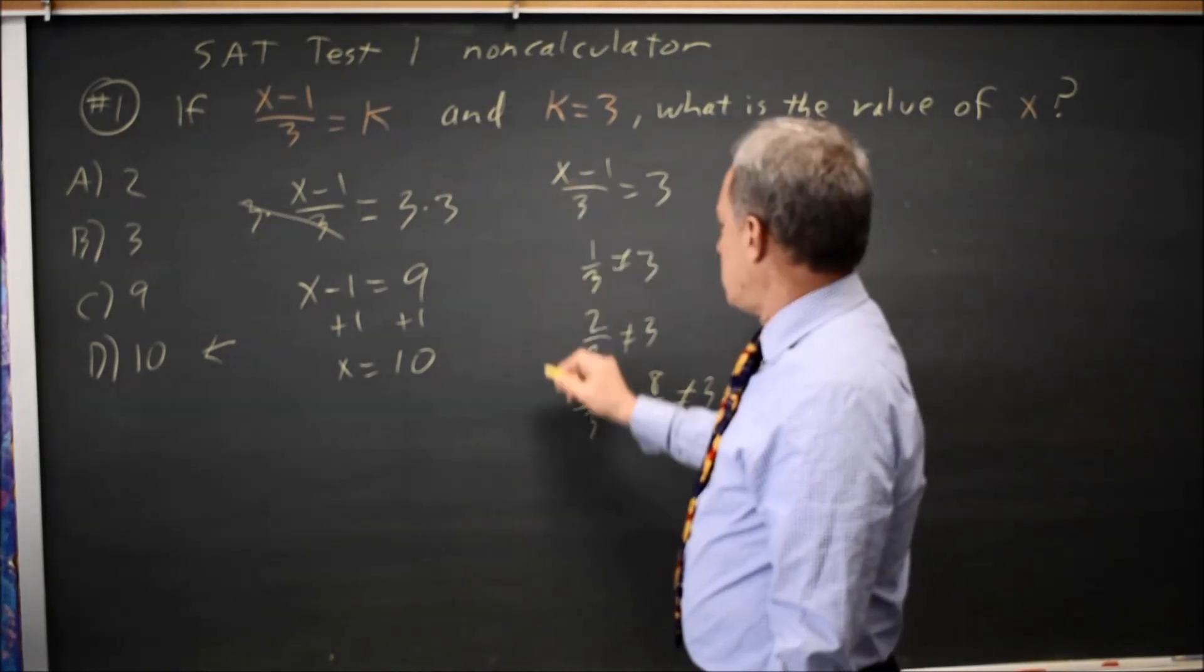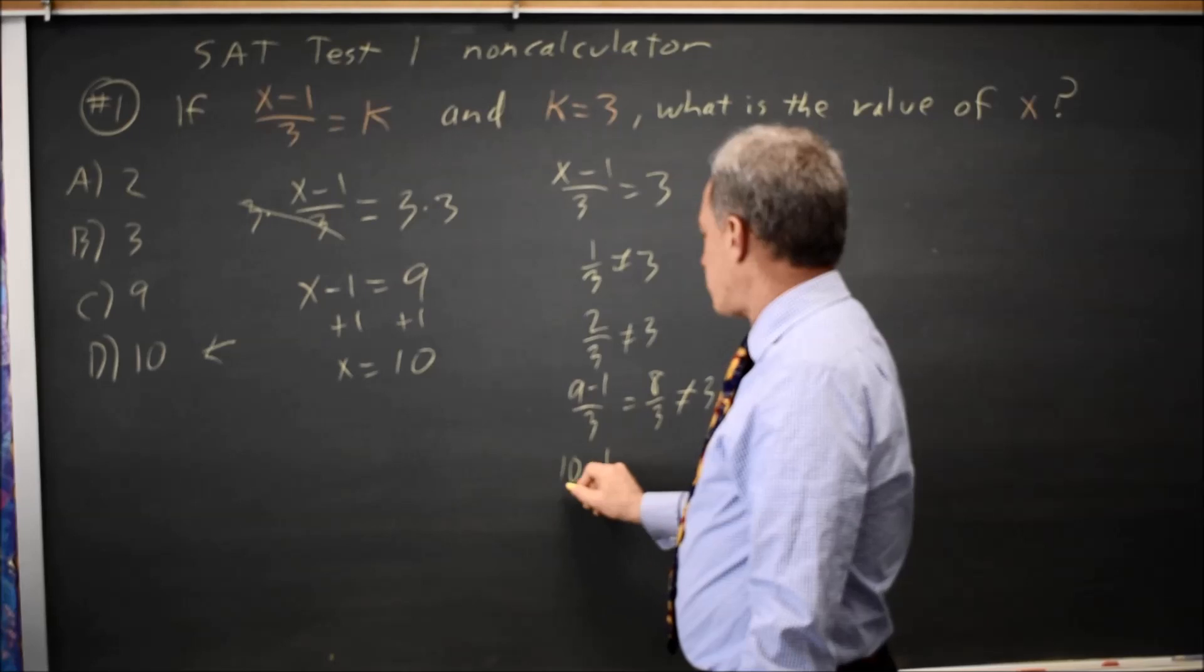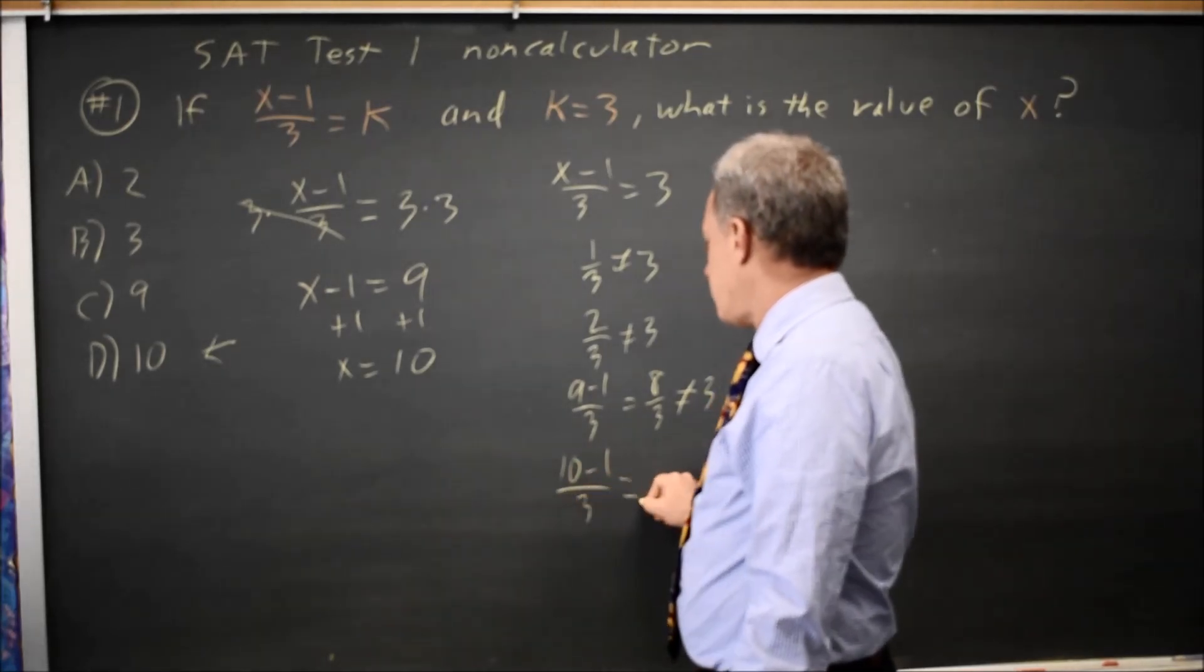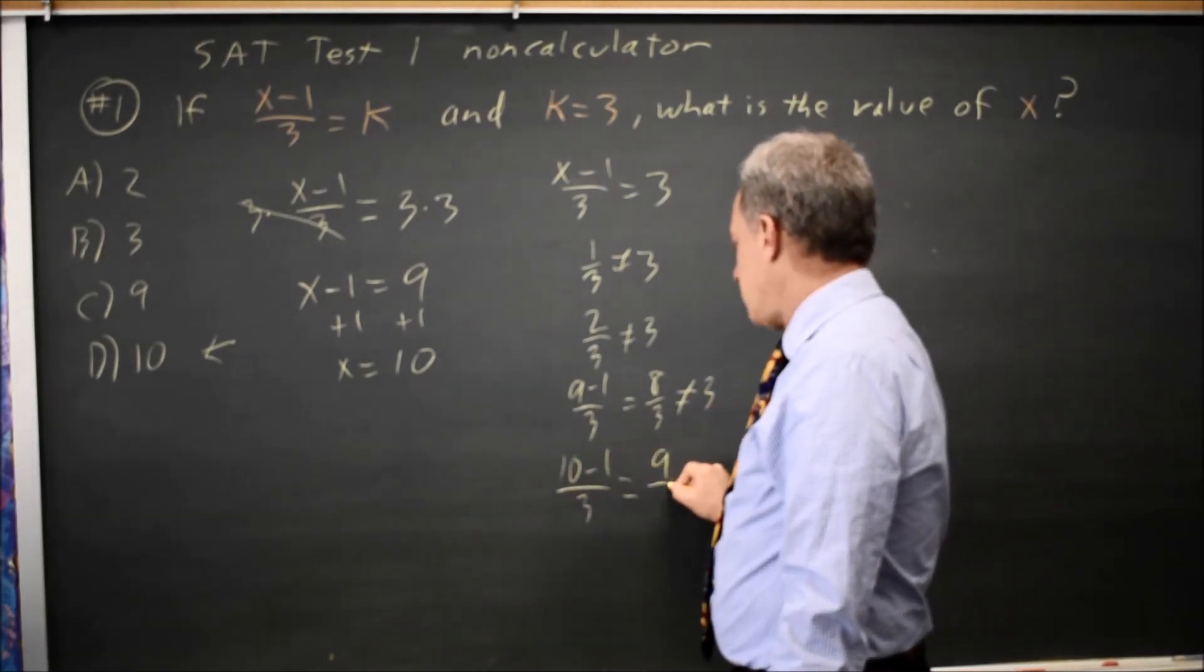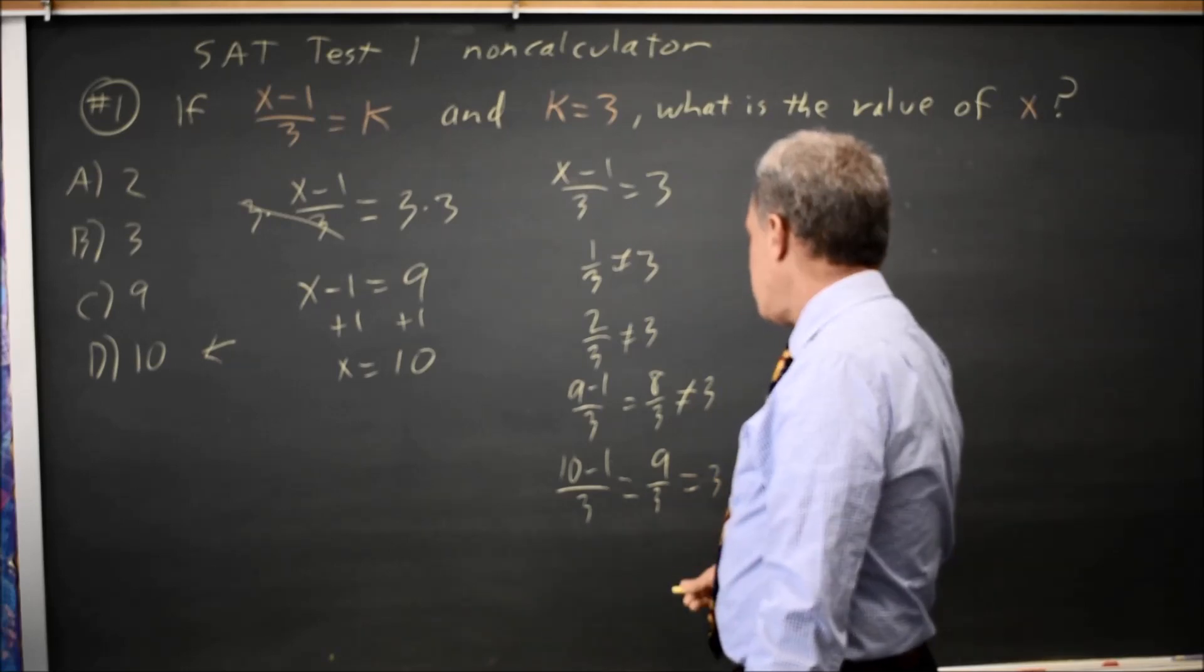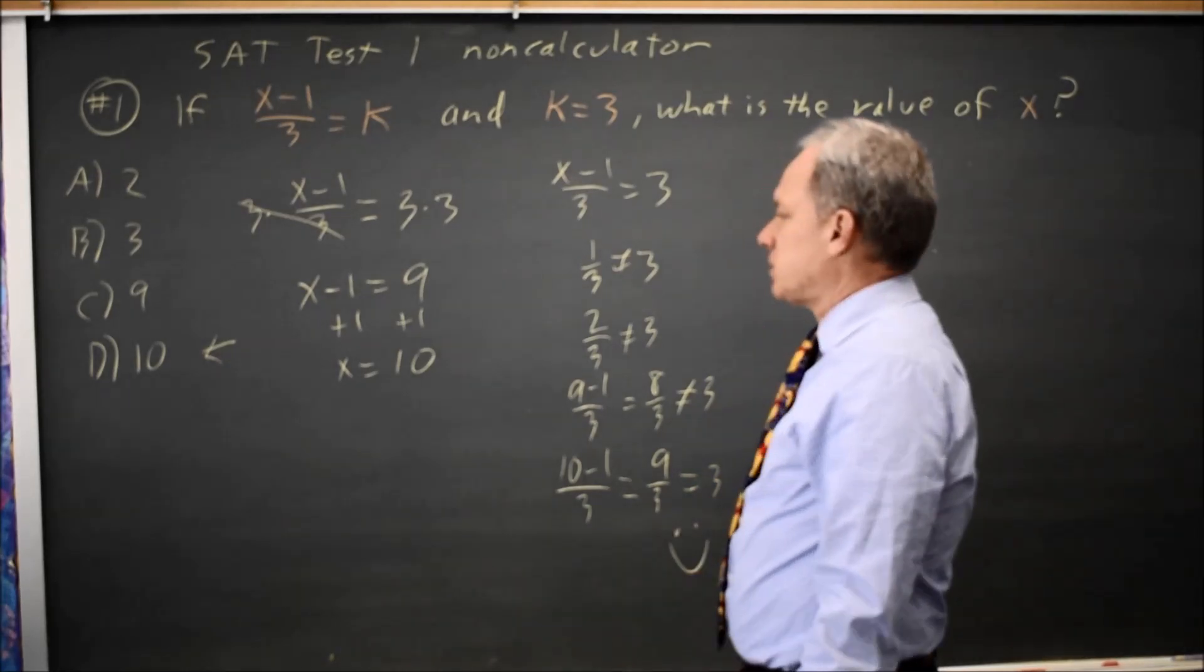And choice D, if x is 10, I get 10 minus 1 from my numerator, and that's over 3. 10 minus 1 is 9, 9 over 3, and that is 3. So choice D is the correct answer.